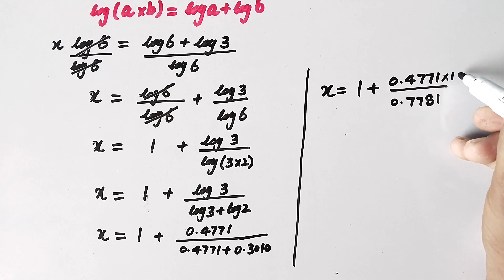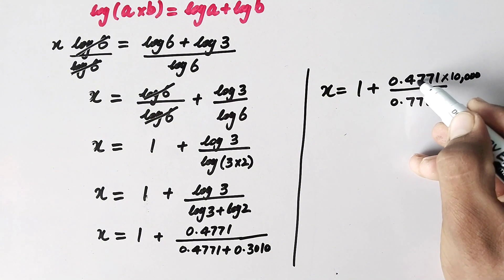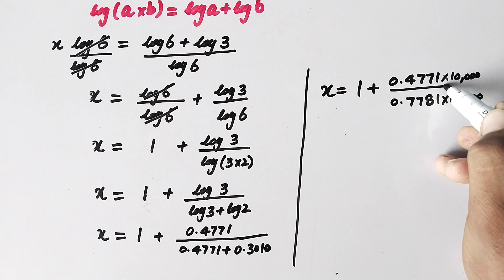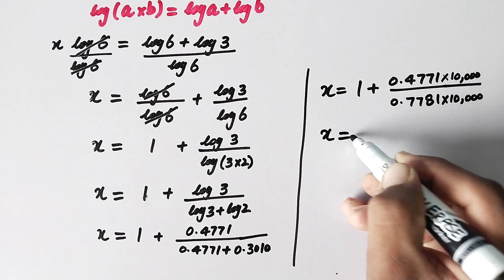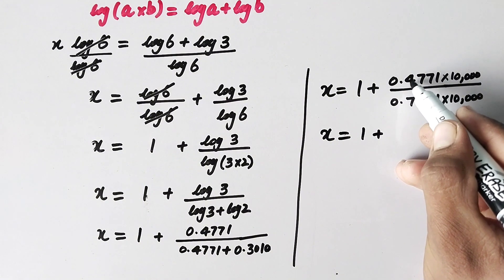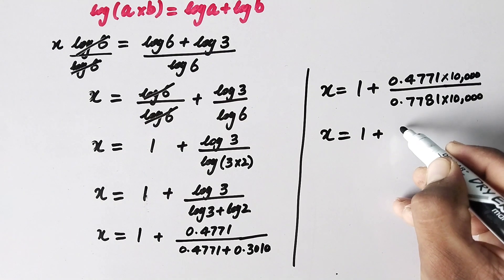These are decimal values, so to make them whole values we will multiply them with 10,000, as there are four numbers after the decimal point. So there will be four zeros with 1.